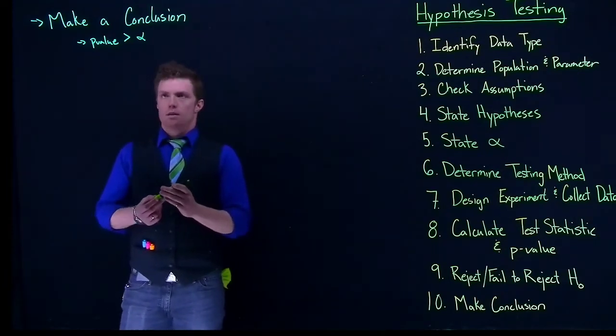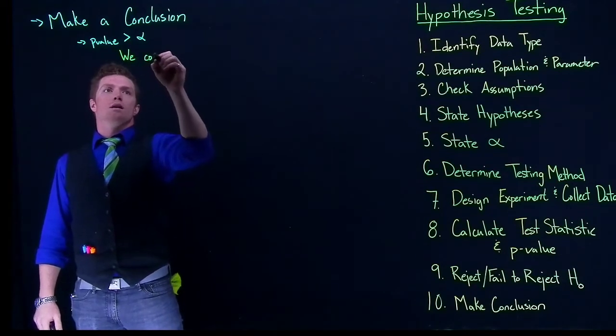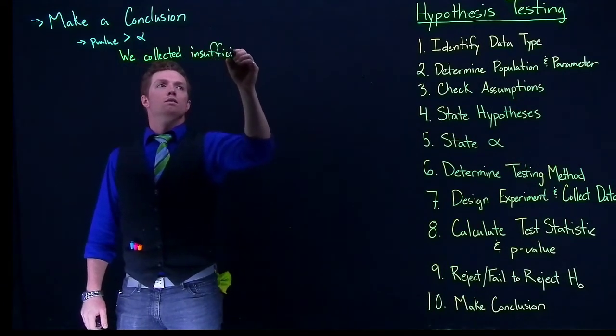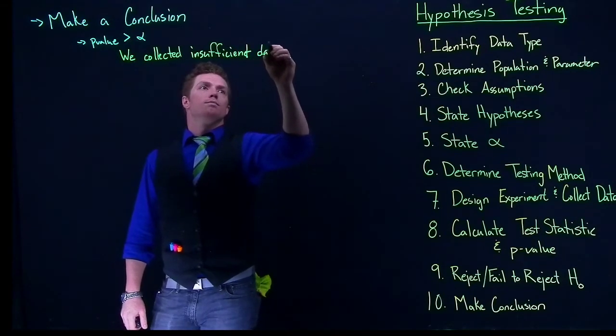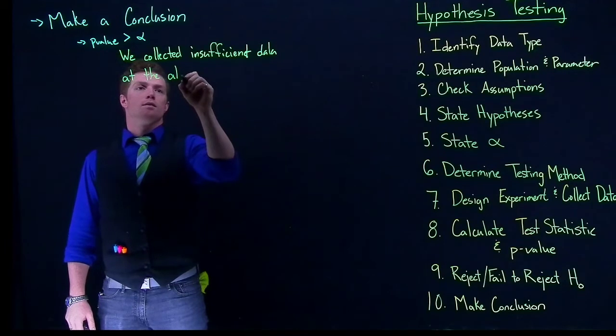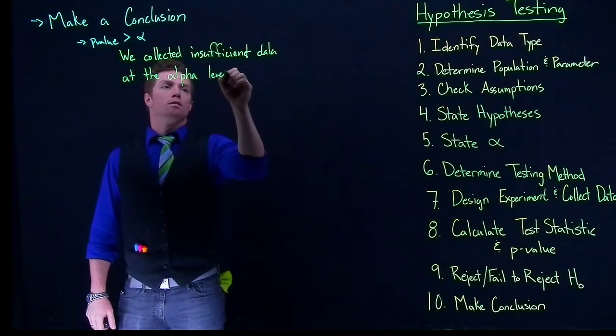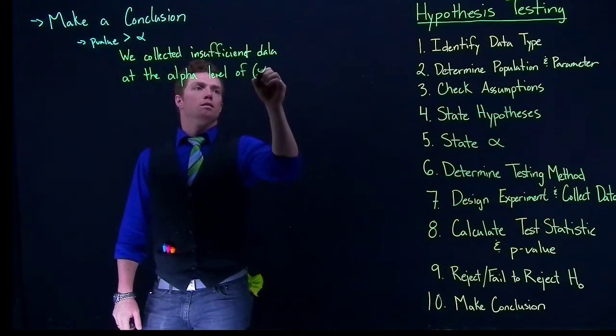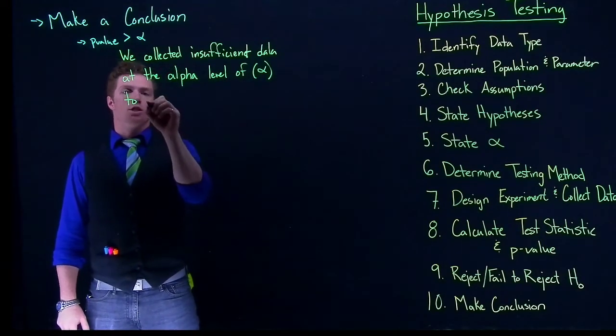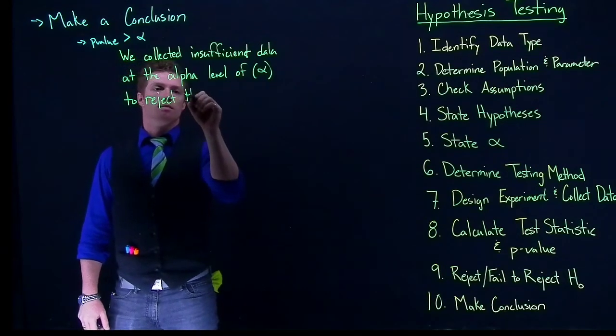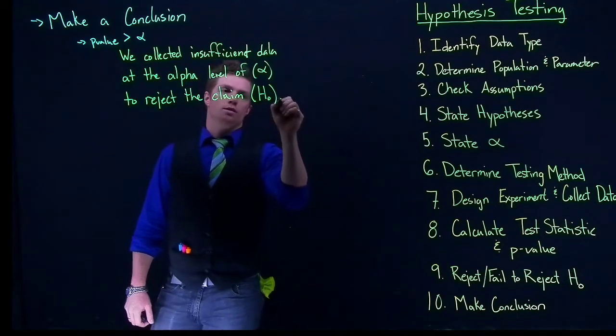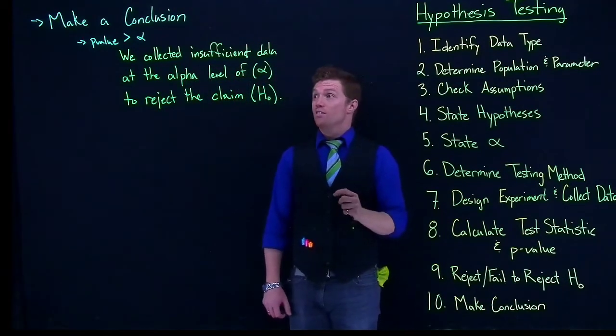We could then say that we collected insufficient data at the alpha level of whatever our alpha was to reject the claim of whatever our null hypothesis was. So we just collected insufficient evidence to reject the claim.